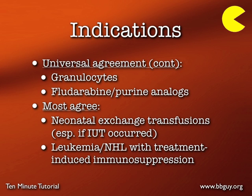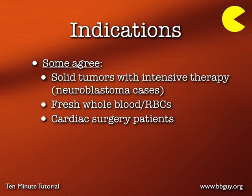Everyone irradiates granulocytes because they're fresh and have lots of T-lymphocytes. Fludarabine is a drug that affects the immune system, and patients on fludarabine should get irradiated products. Most people agree neonatal exchange transfusions should be irradiated, especially if intrauterine transfusion occurred. Most people also irradiate blood for patients with other hematologic malignancies being treated, and some irradiate for solid tumor patients like breast cancer receiving intensive therapy — there are cases of neuroblastoma patients developing TA-GvHD. Some irradiate for fresh whole blood and cardiac surgery patients, though that is a minority.